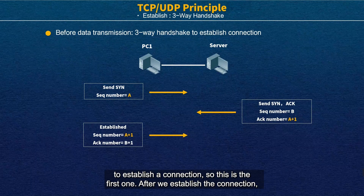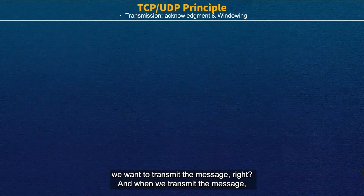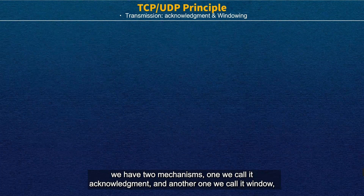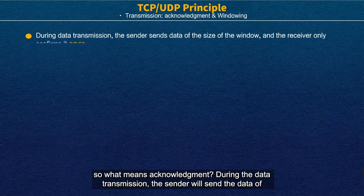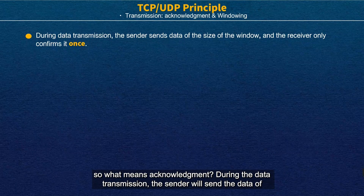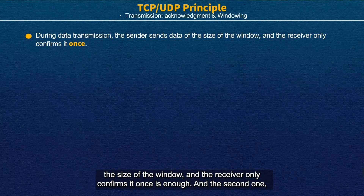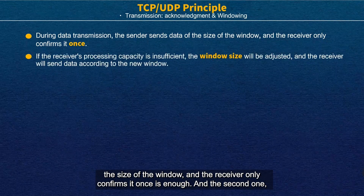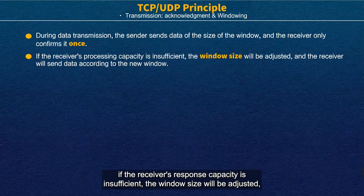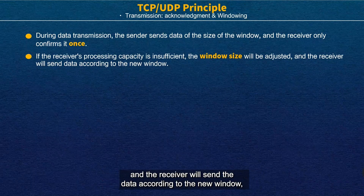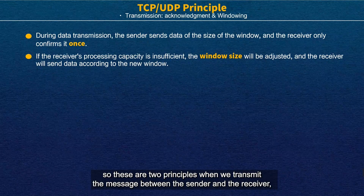After we establish the connection, we want to transmit the message. When we transmit the message, we have two mechanisms: one we call acknowledgement and another we call window. During data transmission, the sender will send data of the size of the window, and the receiver only needs to confirm it once. If the receiver's response capacity is insufficient, the window size will be adjusted and the receiver will send data according to the new window.